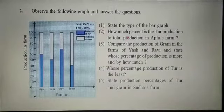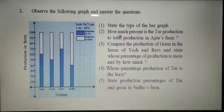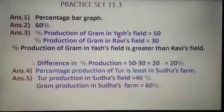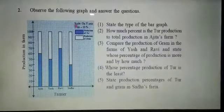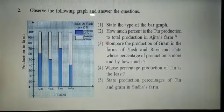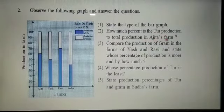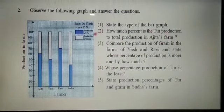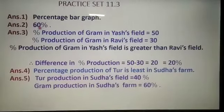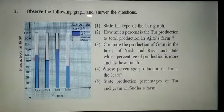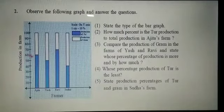Question 1: State the type of the bar graph. Answer: Percentage bar graph. Question 2: How much percent is the tur production to total production in Ajita's farm? Tur production is given by blue color. Looking at the graph, the answer is 60%.